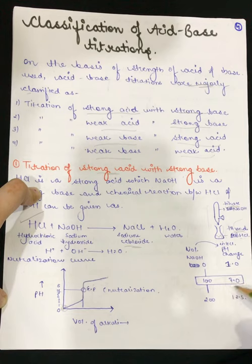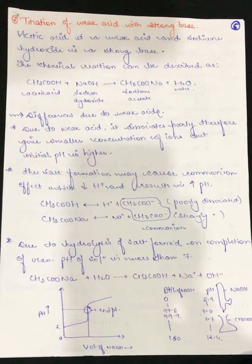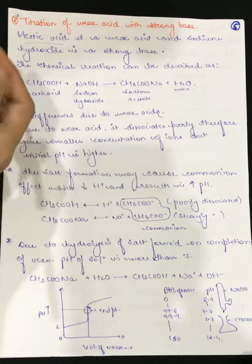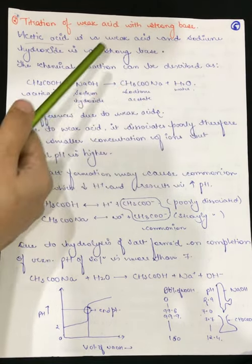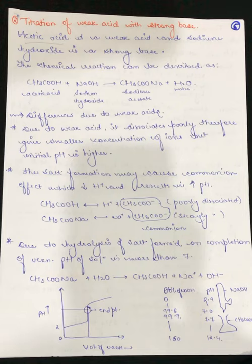Next we have titration of weak acid with strong base. Here we use acetic acid as the weak acid and sodium hydroxide as the strong base. Since the acid is strong in the previous case, the neutralization curve started from the origin. But here, since we have a weak acid, the curve starts slightly above the origin.